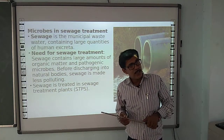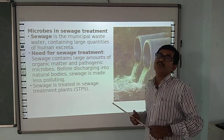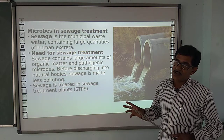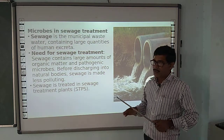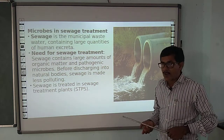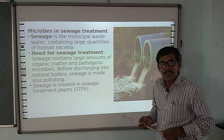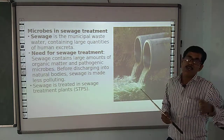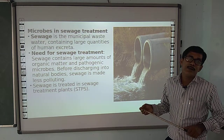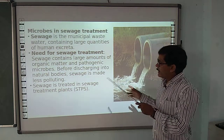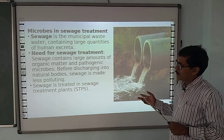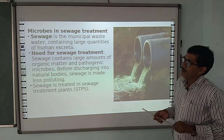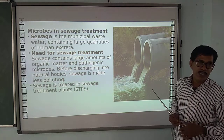Sewage treatment means the removal of impurities from sewage water — whether the waste material is in solid form or chemical form. We remove it before discharging into the river water. The organic matter and pathogenic microbes are removed before discharging into natural water bodies, so sewage is made less polluting.